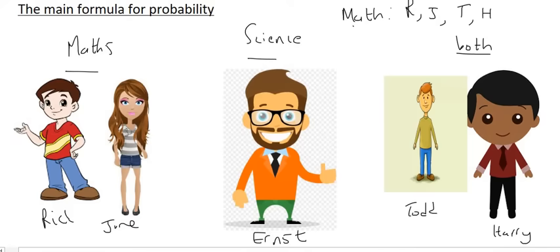Because Todd and Harry do both maths and science, a total of four people stood up. That person with the blindfold then writes down in their book that there are four people who do maths.